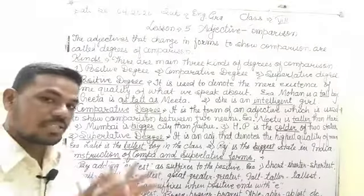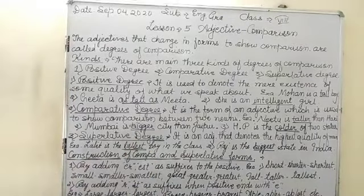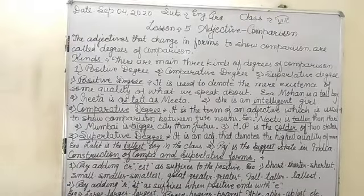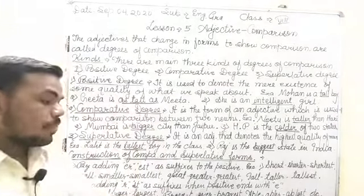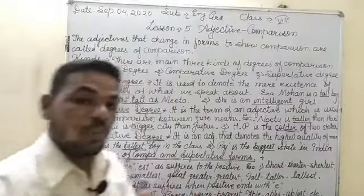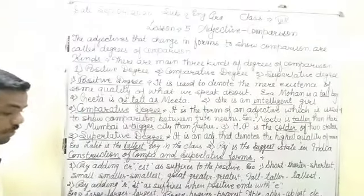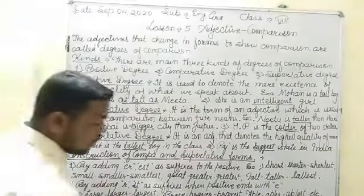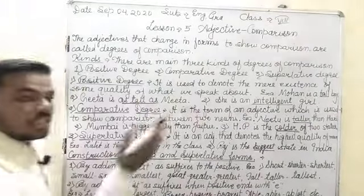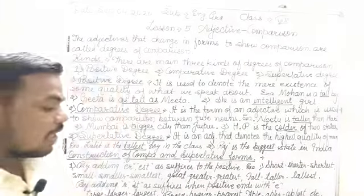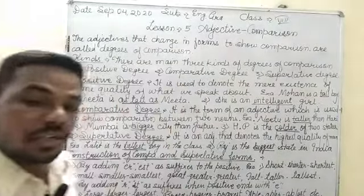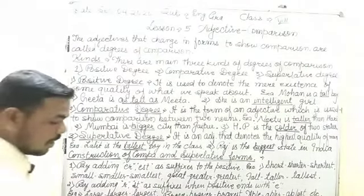Continuing examples for Rule 1: small → smaller → smallest; great → greater → greatest; tall → taller → tallest. In the first rule, we add -er and -est as suffixes to the positive form. Second rule: when the positive form ends with the letter 'e,' we add only -r for comparative and -est for superlative — for example: large → larger → largest.